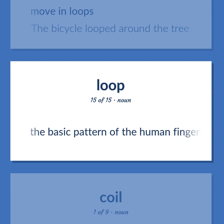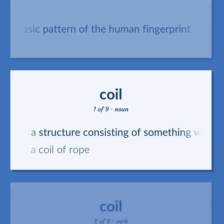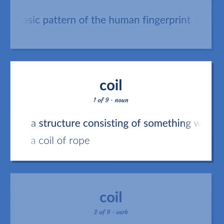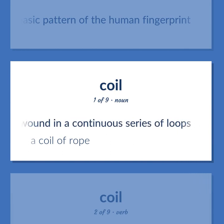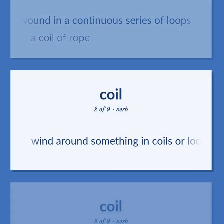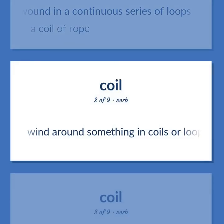The basic pattern of the human fingerprint. A structure consisting of something wound in a continuous series of loops — a coil of rope. COIL: Wind around something in coils or loops.